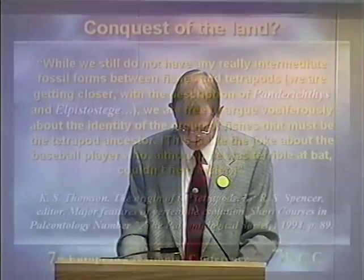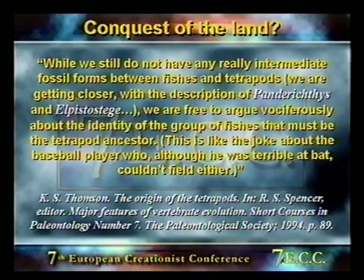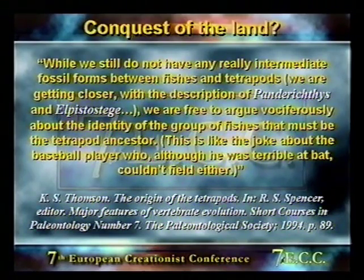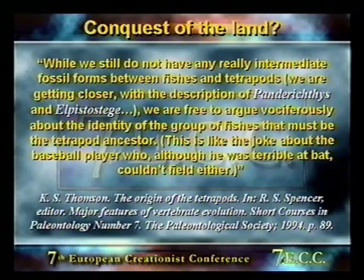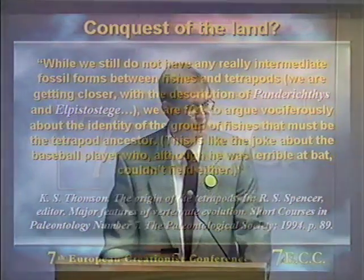The actual ancestor is not found in the fossil record — panderichthyids at best give us an idea of what that ancestor may have looked like. Keith Thomson, another vertebrate paleontologist, wrote in course notes on the origin of tetrapods: 'While we still do not have any really intermediate fossil forms between fishes and tetrapods, we are getting closer with the description of Panderichthys and Elpistostege. We are free to argue vociferously about the identity of the group of fishes that must be the tetrapod ancestor.'